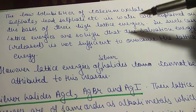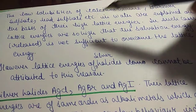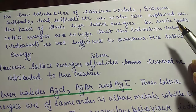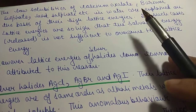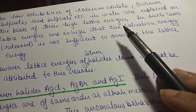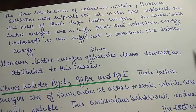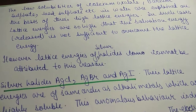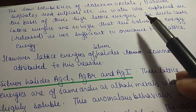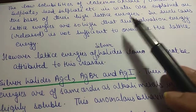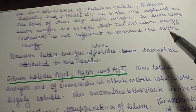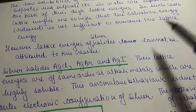There are compounds like calcium oxalate, barium oxalate, barium sulfate, and lead sulfate which have low solubilities in water. These can be explained on the basis of their high lattice energies. These compounds are not soluble in water because their lattice energy is very much greater compared to water's hydration energy, so hydration energy is not enough to overcome their lattice energy.